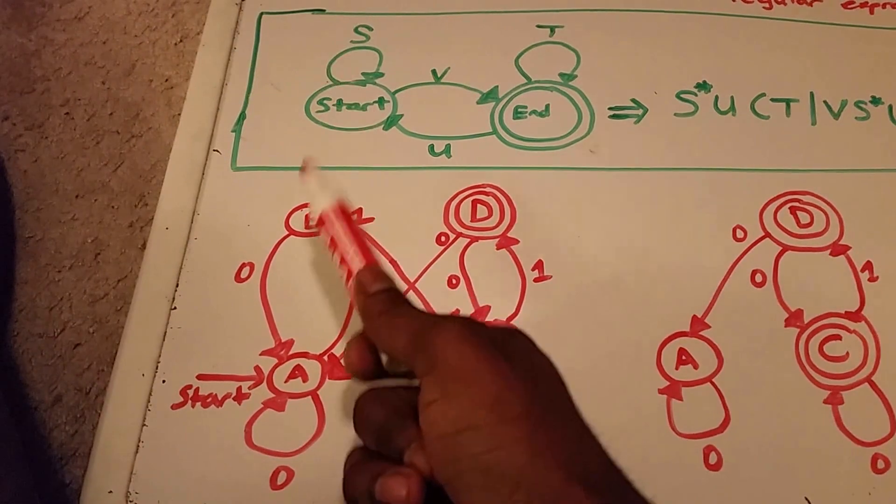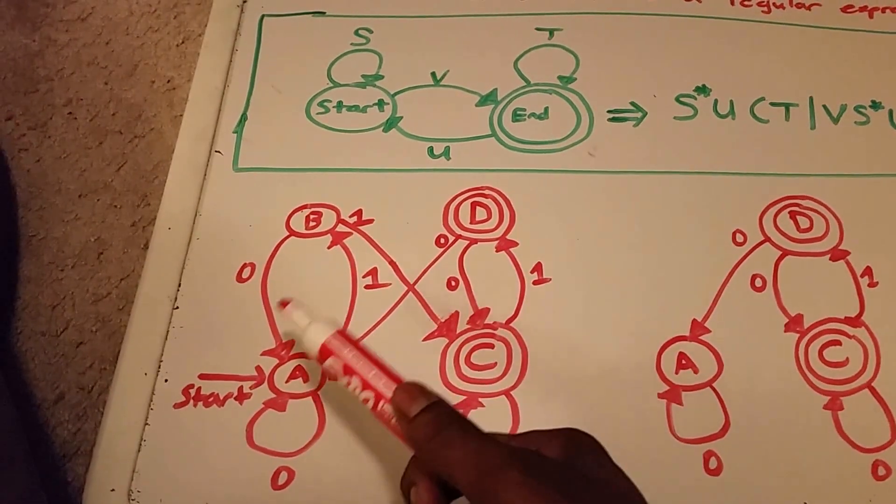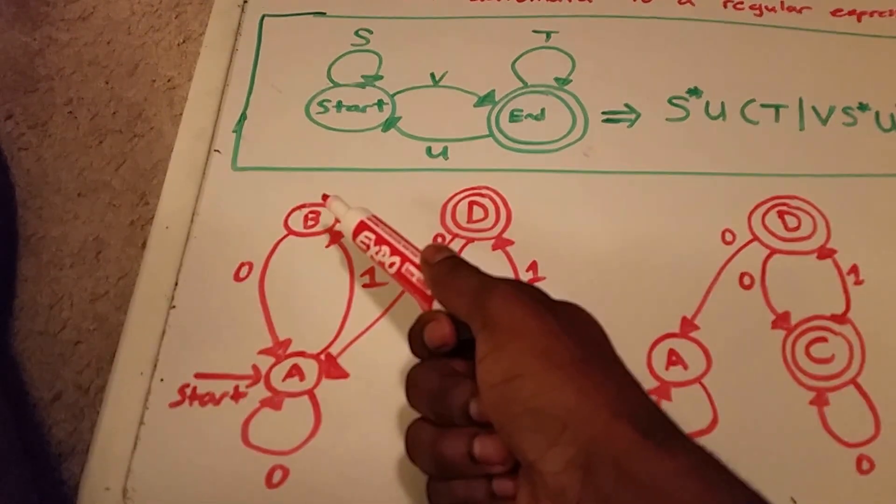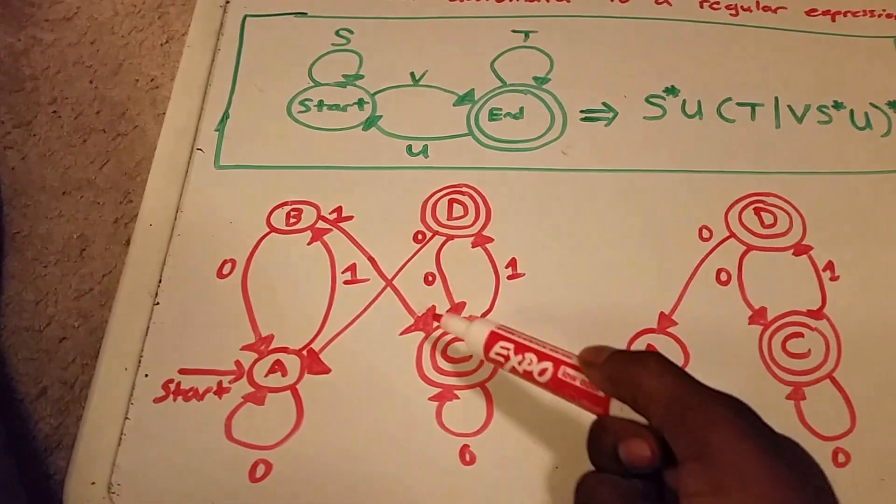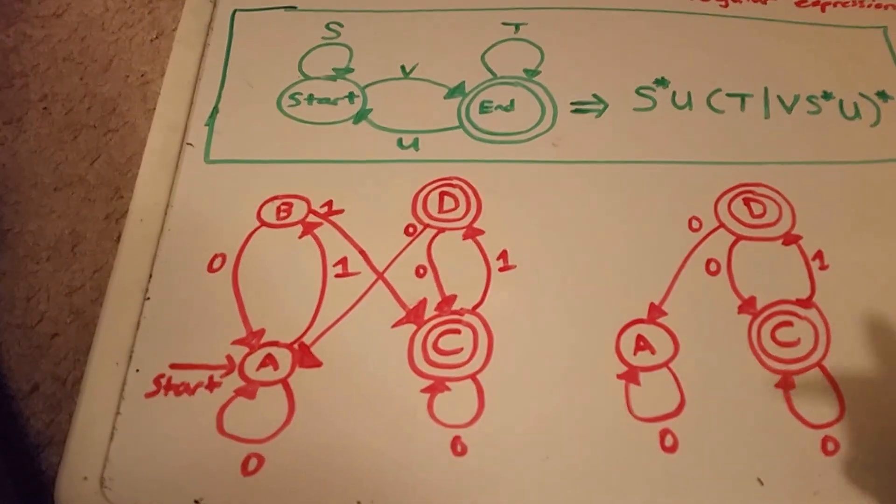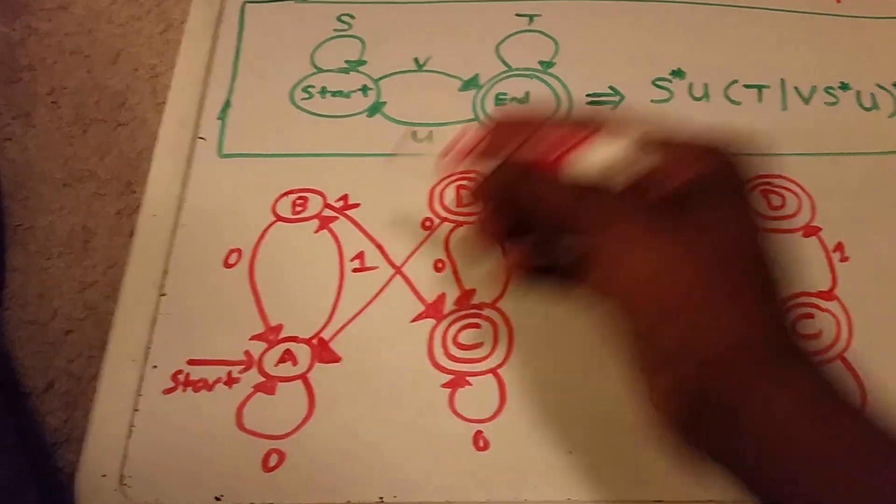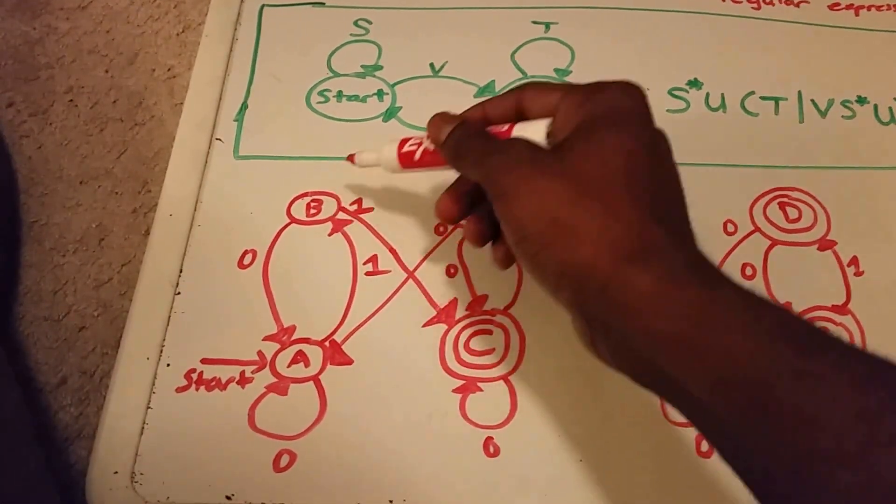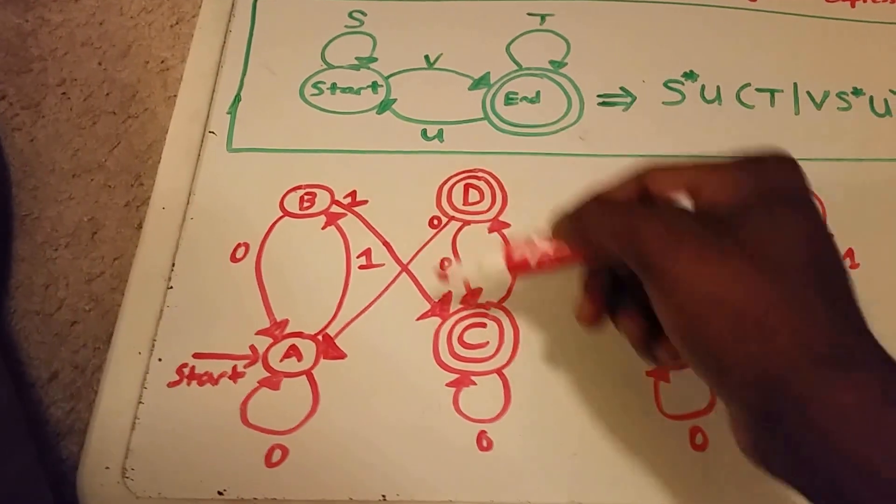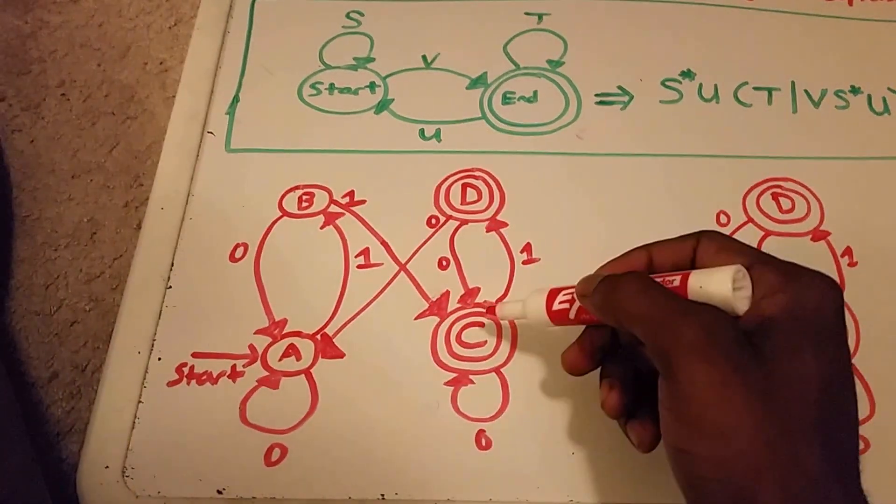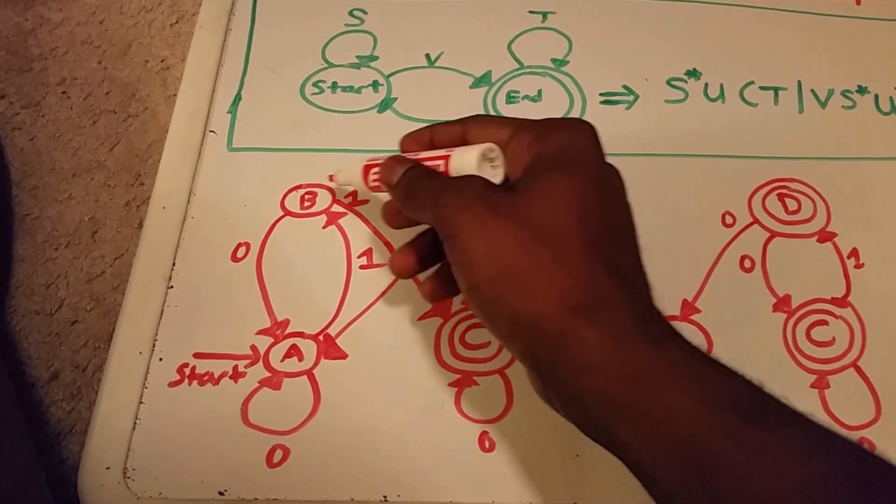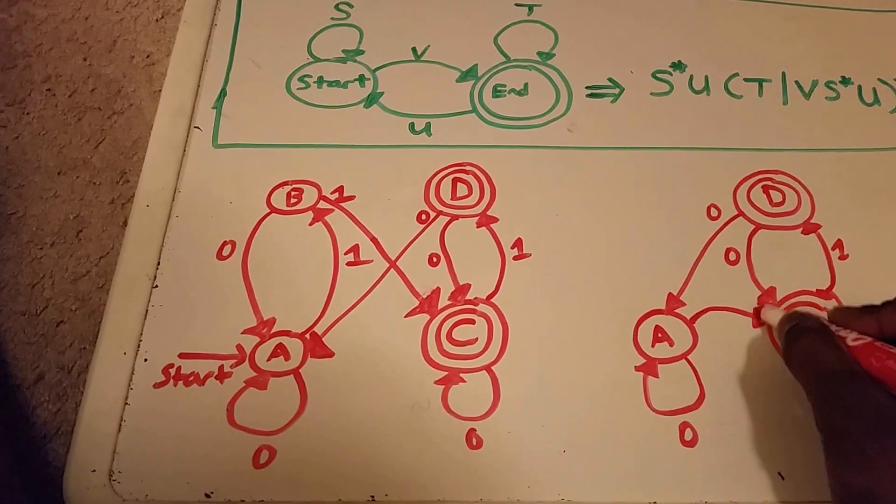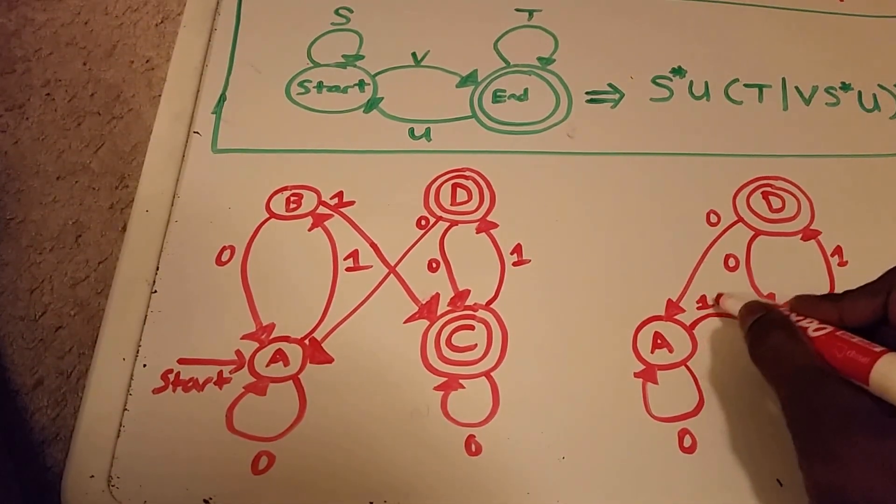So now, if we eliminated state B, we also have to connect these paths from the states that go to B and the states that get input from B. So here we see that A takes the path of one to B, and then from B to C, it takes another one. So from A to C, it takes input one and then one. So we can draw our new path directly to C without going through B, and it's one, one.